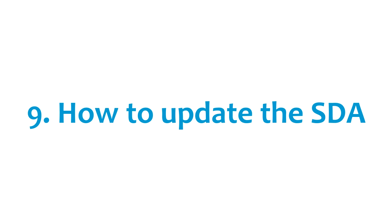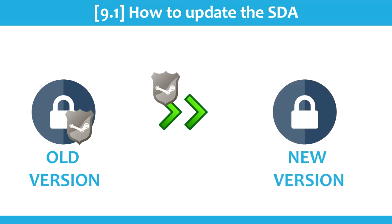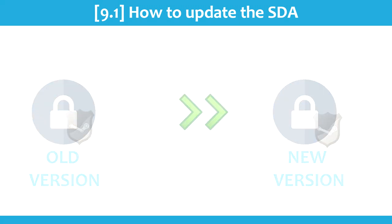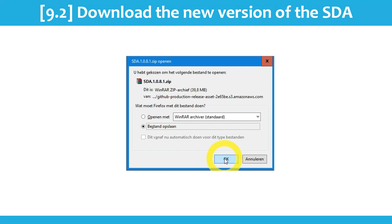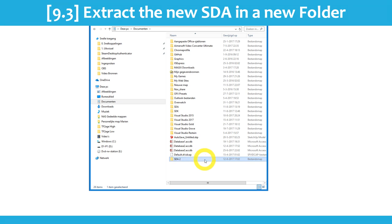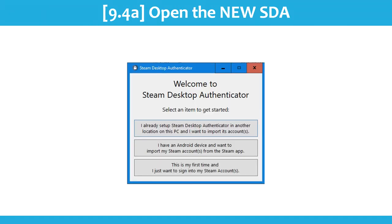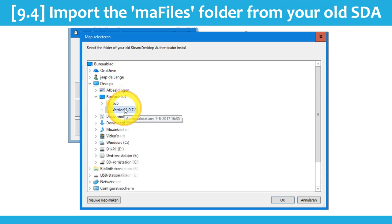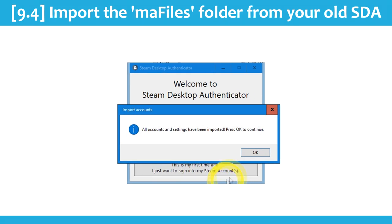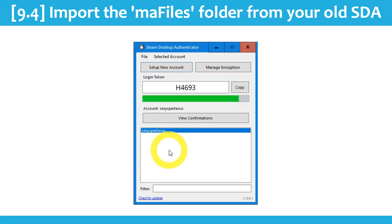Now we're heading to how to update your SDA. Updating might not be the best word — you download a new version and have to transfer your Steam account and configuration manually. The Steam Desktop Authenticator shows a popup when you start it, or you can click 'Check for Updates.' Your web browser opens and downloads a new version. Once downloaded, create a new folder and extract the new authenticator there with WinRAR or WinZip. Open the Steam Desktop Authenticator — a dialog asks what you want to do. Click 'I already set up Steam Desktop Authenticator in another location on this PC and I want to import its accounts.' A folder dialog opens — go to your old SDA folder and select the maFiles folder. The SDA confirms accounts are imported successfully, then asks for the encryption key of your old SDA. Enter it, and you've updated your SDA.